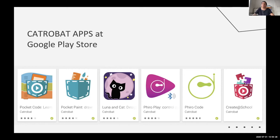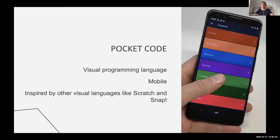Catrobat has at the moment one, two, three, four, five, six, and from today seven apps in Play Store. Our main app is called Pocket Code.